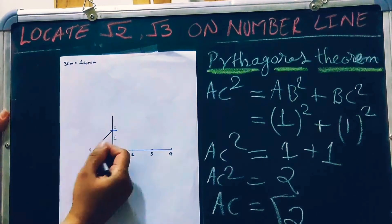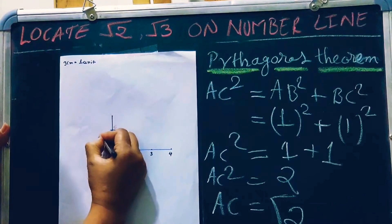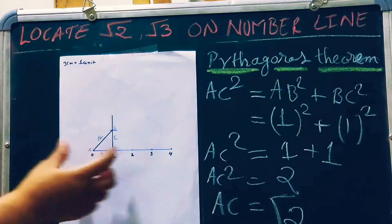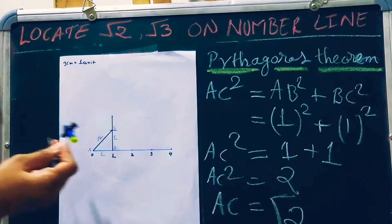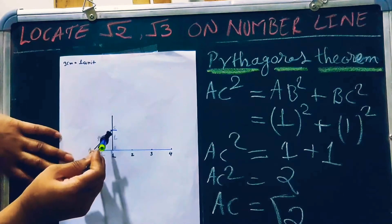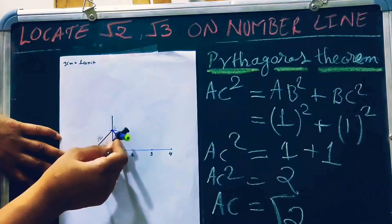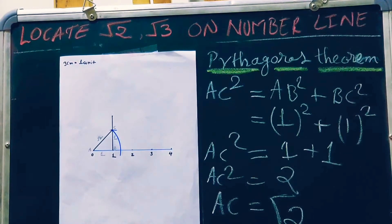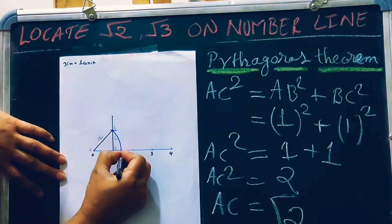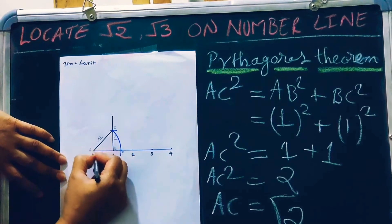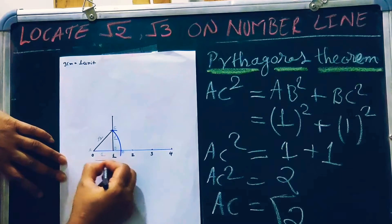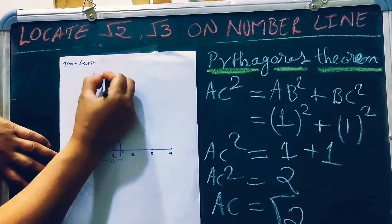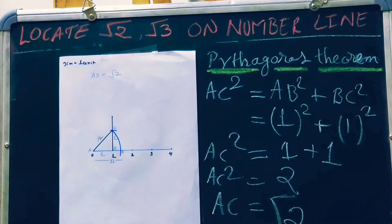Now, because this is root 2 and we want to draw root 2 on the number line, what will we do? Make an arc from this point, and wherever it cuts on the number line, mark this point as D. The length of AD is equal to root 2.